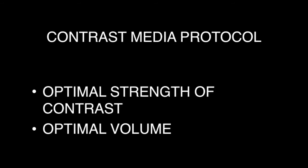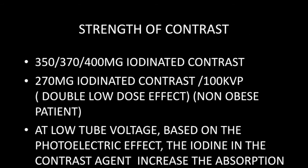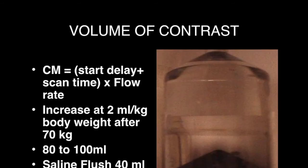For contrast media protocol, optimal strength and volume should be used. We prefer a high iodine contrast — 400 mg of iodine — for imaging the coronary arteries. However, there is a recent trend to use low-iodinated contrast with low kVp imaging for non-obese patients. The principle is that at low tube voltage there is increased photoelectric effect of iodine, absorbing more X-rays at low kVp, which increases the CT value of contrast within the coronary arteries. For a patient of average build — 70 kg or less — we use around 75 ml of contrast.